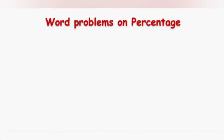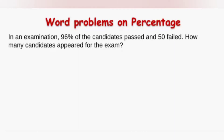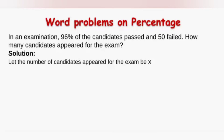Now let us see some word problems on percentage. In an examination, 96 percent of the candidates passed and 50 failed. How many candidates appeared for the exam? In this question, 96 percent of candidates passed and 50 candidates failed. We need to find the total number of students who wrote the exam. Let the number of candidates who appeared be x.